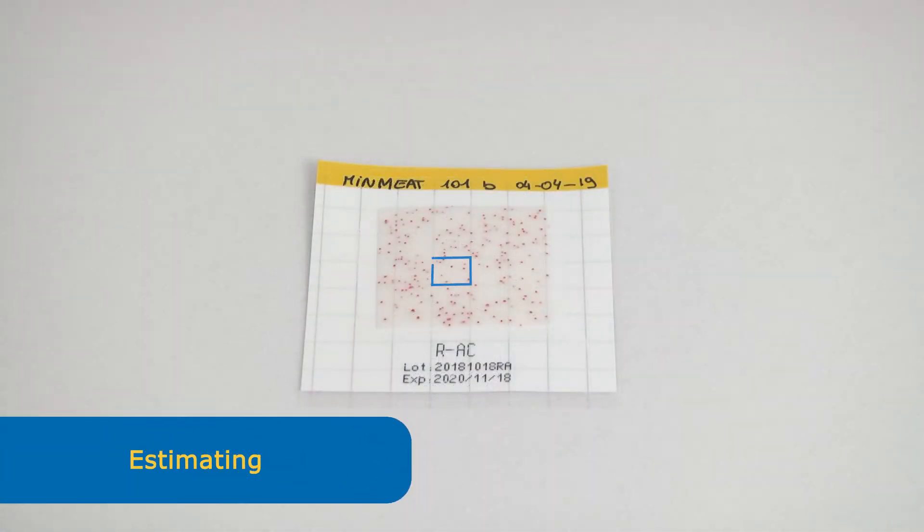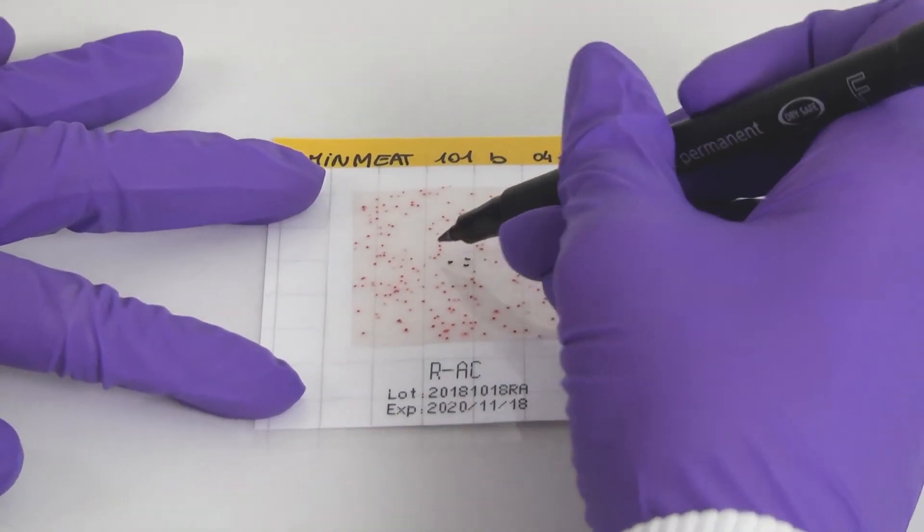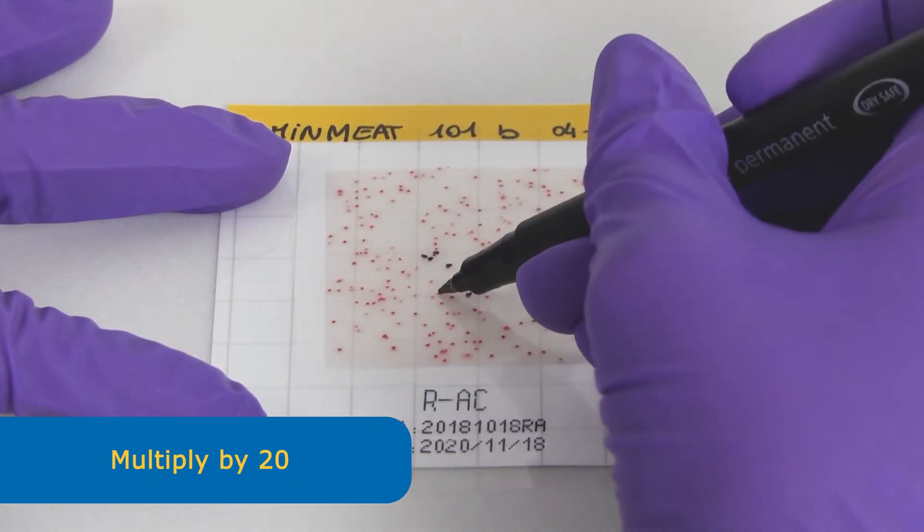If the large number of colonies makes it difficult to count, colony counts can be estimated by counting colonies in one grid square and multiplying by 20.